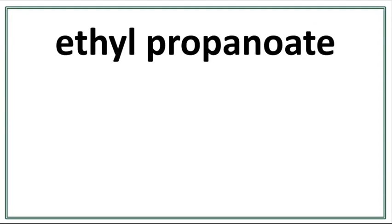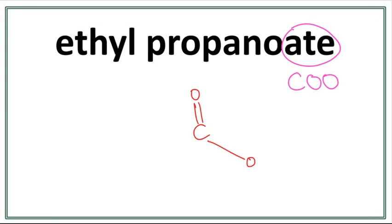The 'ate' ending tells us that this has a functional group of COO. When we draw the COO, we end up with carbon having a double bond with oxygen — this first CO right here — and carbon having a single bond with this oxygen right here. So we have the functional group drawn in.